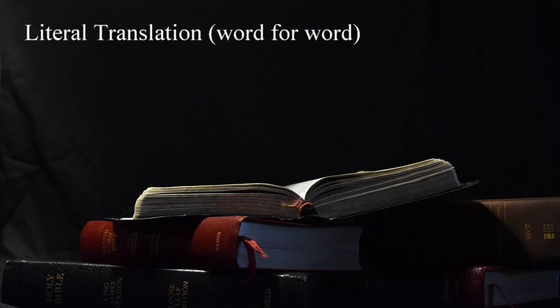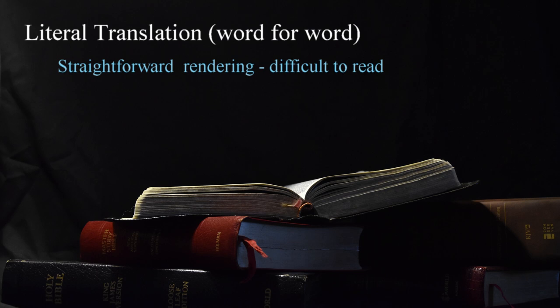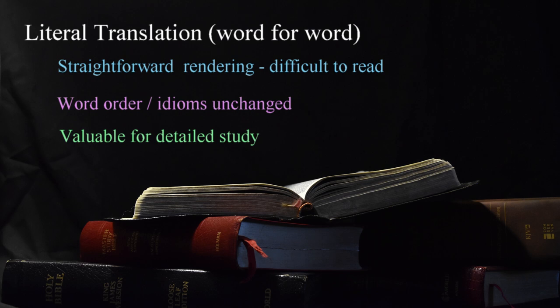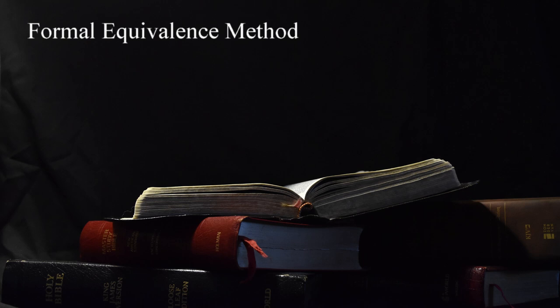The first method is the literal, or word-for-word, translation. This is a straightforward rendering of words from the original language into the target language. Literal translations are difficult to read, as there's no attempt to change the word order or render idioms in a manner understandable to a modern reader. These have value for very detailed study when we want to look deeper into specific words or phrases and are many times available as interlinear Bibles, showing both the original language and the rendered version. A literal translation wouldn't be recommended for someone just starting out.